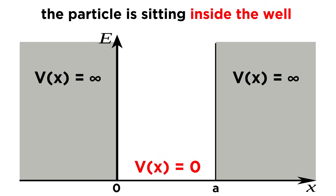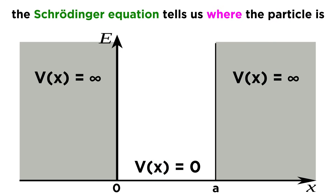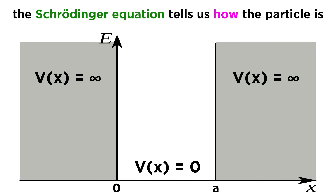When we say that V of x equals infinity for these regions, this is the mathematical way of saying the particle is definitely not there. That may seem counterintuitive — infinite potential sounds like the particle should certainly be there — but remember that objects proceed towards lower potential, and infinity is the opposite of that. So we know the particle is sitting in the square well, and we use the Schrödinger equation to figure out how the particle lives within these walls.